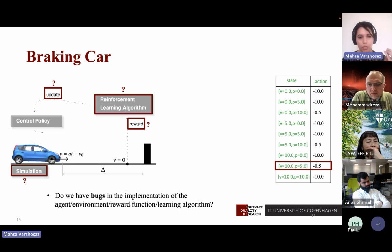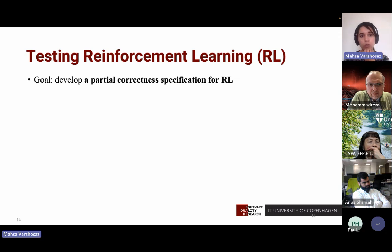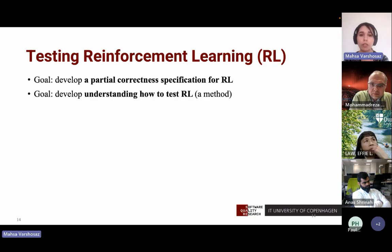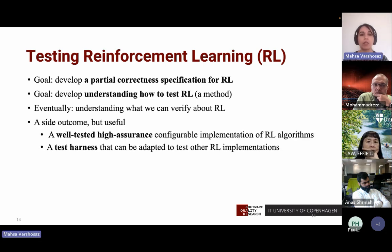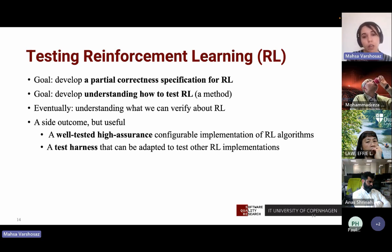To answer this, our goal is to develop a partial correctness specification for reinforcement learning, develop an understanding of how to test these RL setups, and eventually understand what we can verify. A side outcome of our work is a well-tested, high-assurance implementation of the RL algorithms we cover, and a test harness that can be adapted for other reinforcement learning implementations.